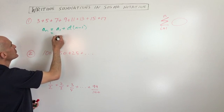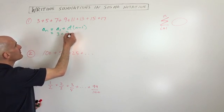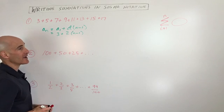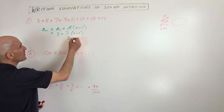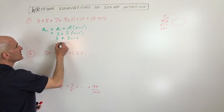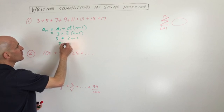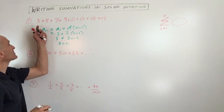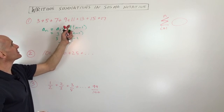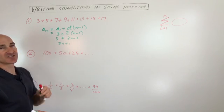And basically what this is is the first term plus the common difference times n minus one. So the first term is three, but we keep adding two, n minus one times. So this is going to be two n minus two plus three, which is two n plus one. And you can test that out. You can see when n is one, you're getting three. If n is four, you're getting nine, and so on.